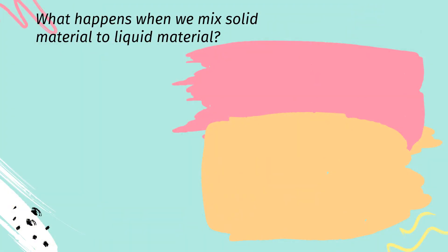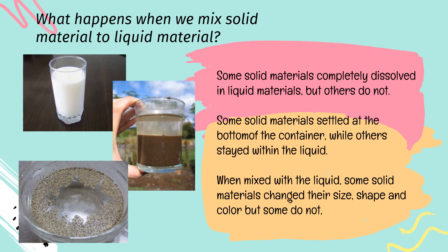What happens when we mix solid material with liquid material? Some solid materials completely dissolve in liquid, but others do not. Some solid materials settle at the bottom of the container, while others stay within the liquid. When mixed with liquid, some solid materials change their size, shape, and color, but some do not.